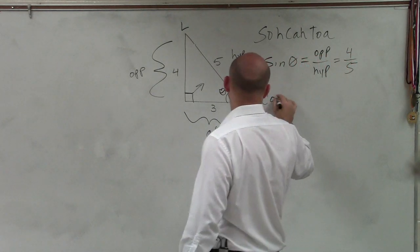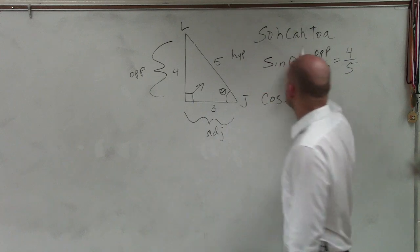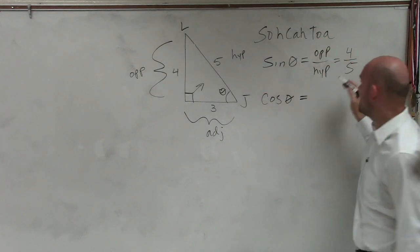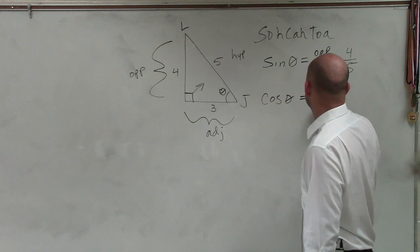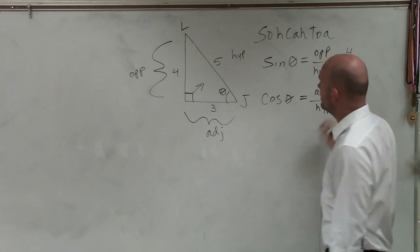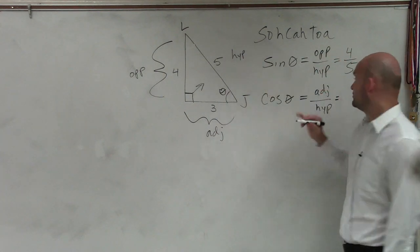Cosine. Cosine is adjacent over hypotenuse. Adjacent side is 3, hypotenuse is 5.